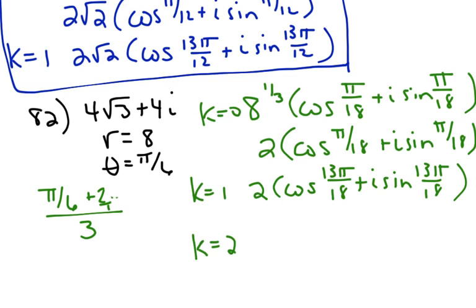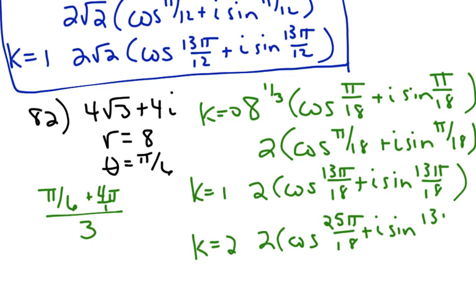For k=2, we add 4pi instead of 2pi. So we get 25pi/6, which divided by 3 becomes 25pi/18. Remember that when simplifying fractions, ignore the pi's or the calculator will give you a decimal answer. So for k=2, we get 2 cosine(25pi/18) plus i sine(25pi/18). Those are the cube roots of 4√3 plus 4i.